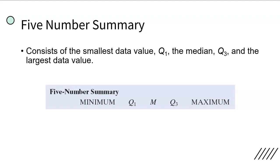The five-number summary consists of the smallest data value, which is also the minimum, Q1, the median, which is also called Q2, Q3, and the largest data value. If you watched the previous video, we talked about how to find Q1, the median, and Q3 — none of that is different. It's just now taking all those numbers, putting them together, adding the minimum and the maximum. That gives you your five-number summary. It's just a new term: five-number summary.